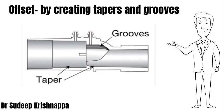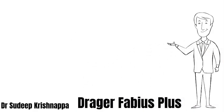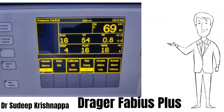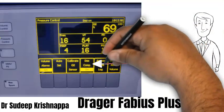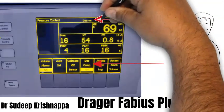As Drager machines use a hot wire anemometer, when desflurane is used in some of the older workstations like Fabius and Fabius Plus, some inaccuracies in flow measurement can creep in. This is because desflurane is heated to a temperature of 39 degrees and is added in a significantly larger proportion compared to other inhalational agents. Both of these factors can alter the temperature of gases flowing in the breathing circuit, which in turn can affect the temperature drop at the anemometer, thereby causing variations in flow measurement.